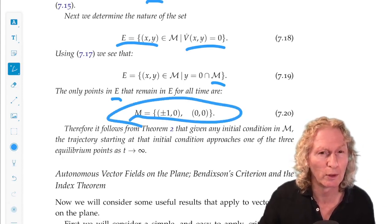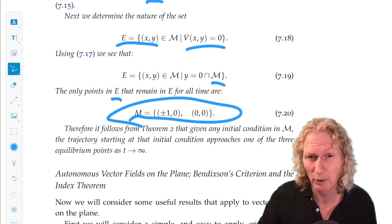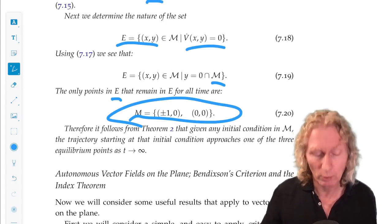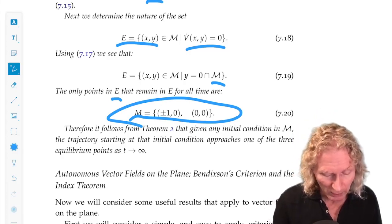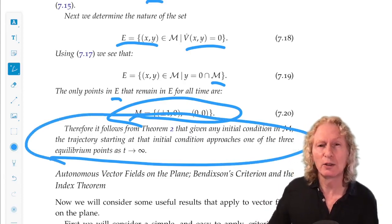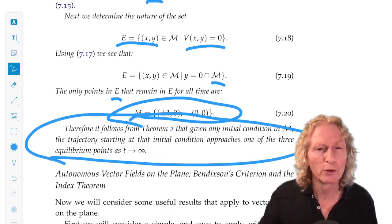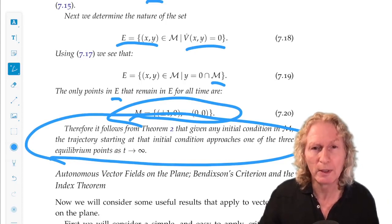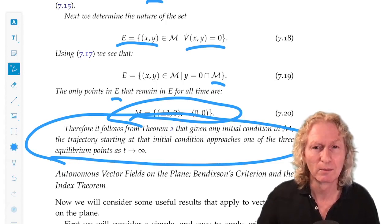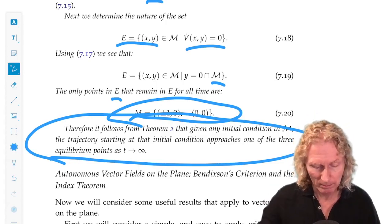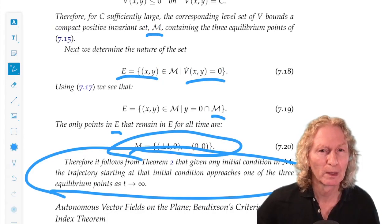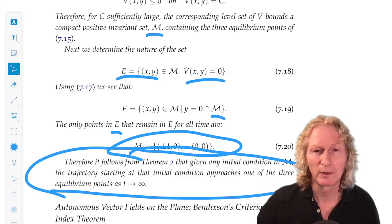The only points in E that remain in E for all time are the three equilibrium points. Remember, I just argued that if you're not on one of the equilibrium points, but you start on the x-axis, you leave because ẏ is non-zero, except for the three equilibrium points. So the LaSalle invariance principle tells us that given any initial condition, you're going to approach one of these three equilibrium points.